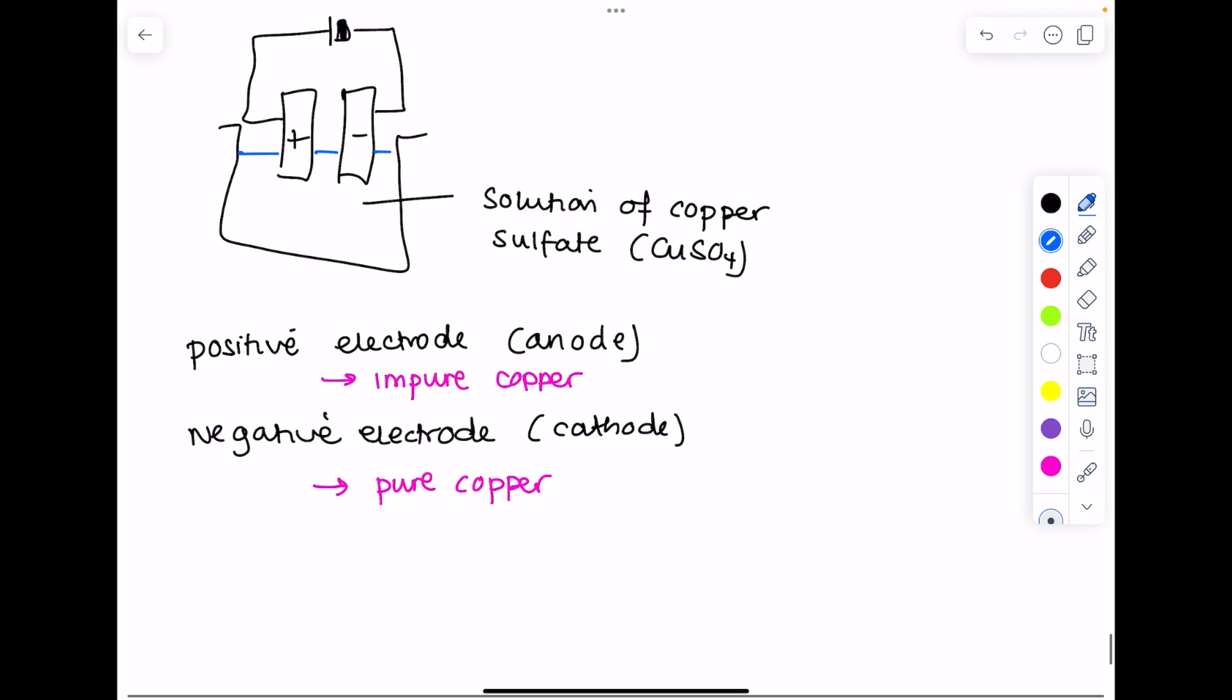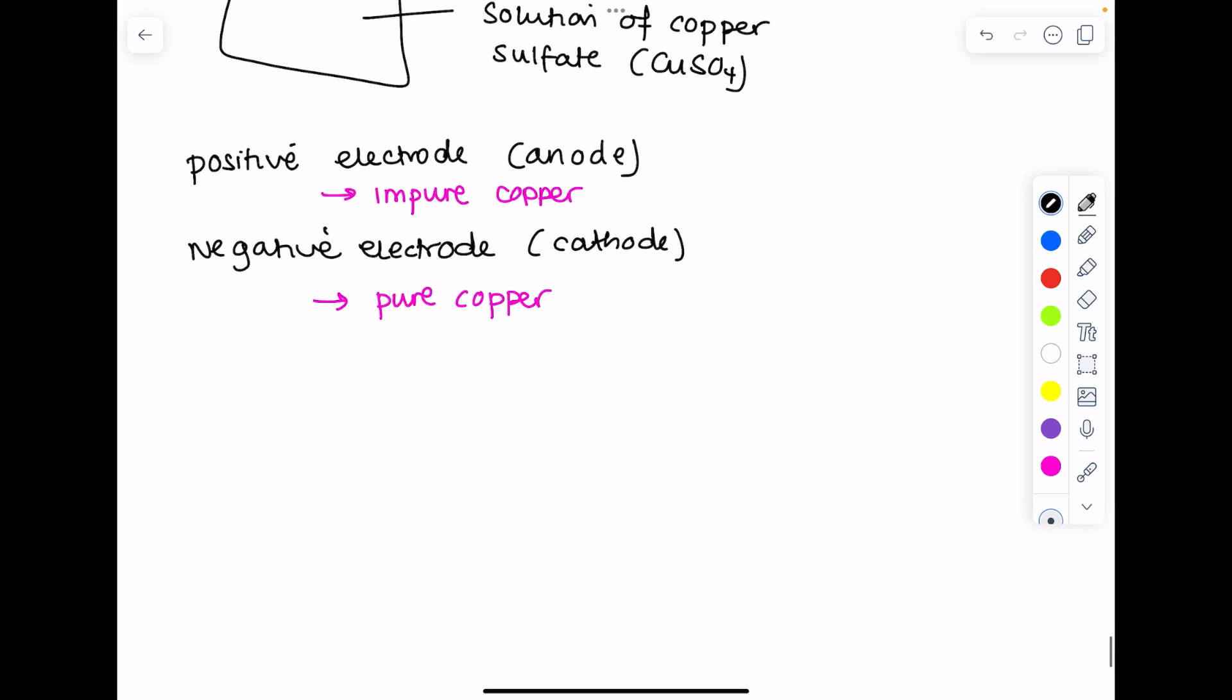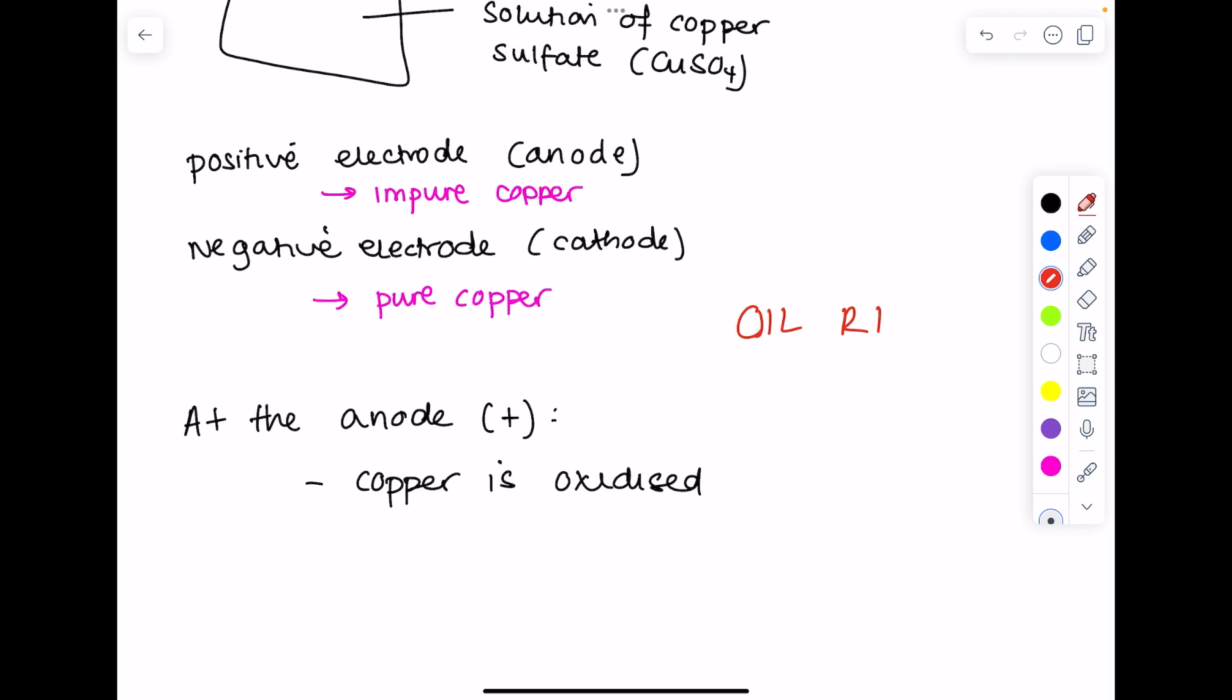And how to actually understand the chemistry of what's taking place, you need to start by saying what happens at the anode. So remember that's the positive electrode. We're going to say that copper is oxidized. Use the mnemonic OIL RIG to help you remember what that means. Oxidation is loss of electrons, reduction is gain. So that means that copper must have lost electrons, and I'll show you a half equation representing that.